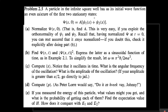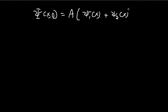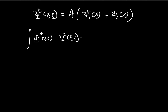In this problem, in part A, we're going to normalize this component. We have the initial wave function equal to the x component of the first stationary state plus the x component of the second stationary state. If this is normalized, then integrating the conjugate of the wave function times itself is going to be equal to 1.